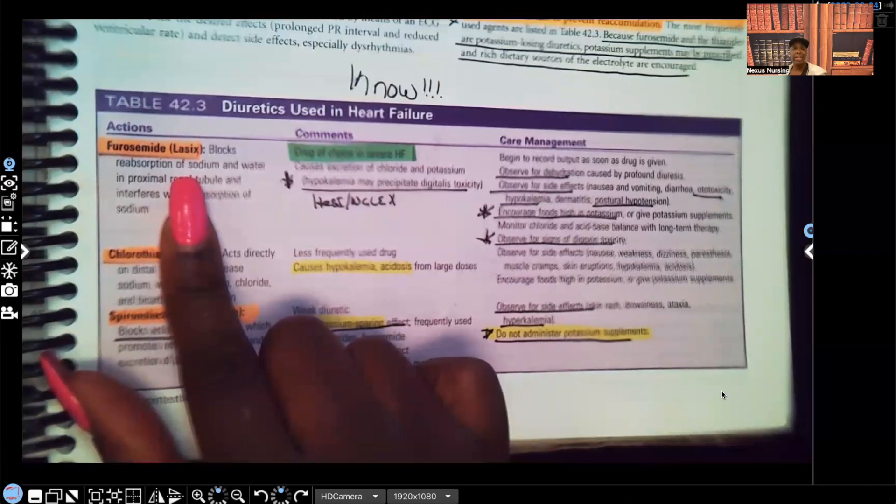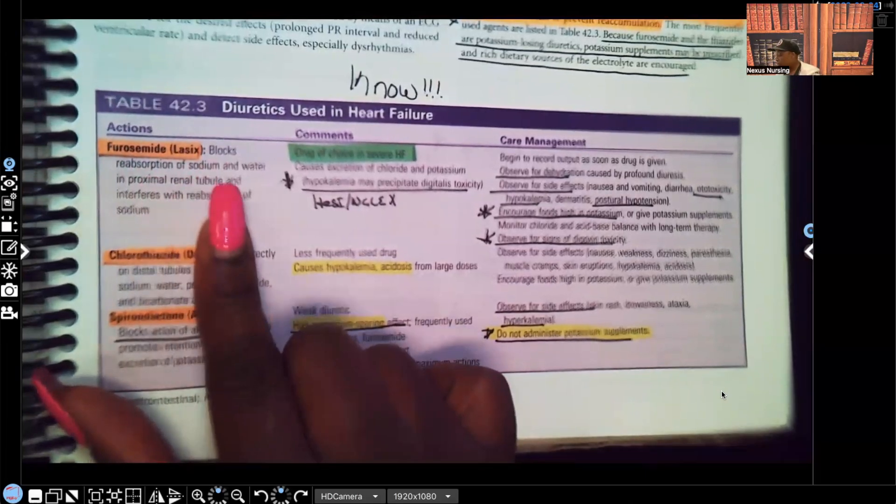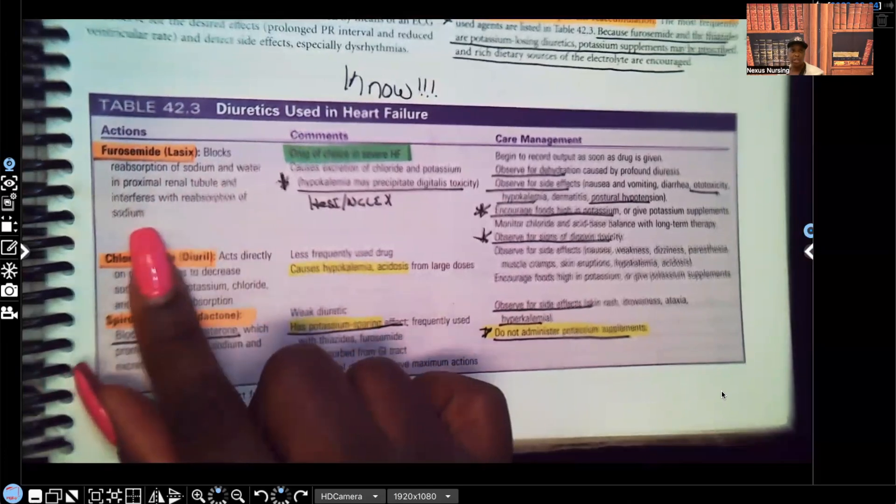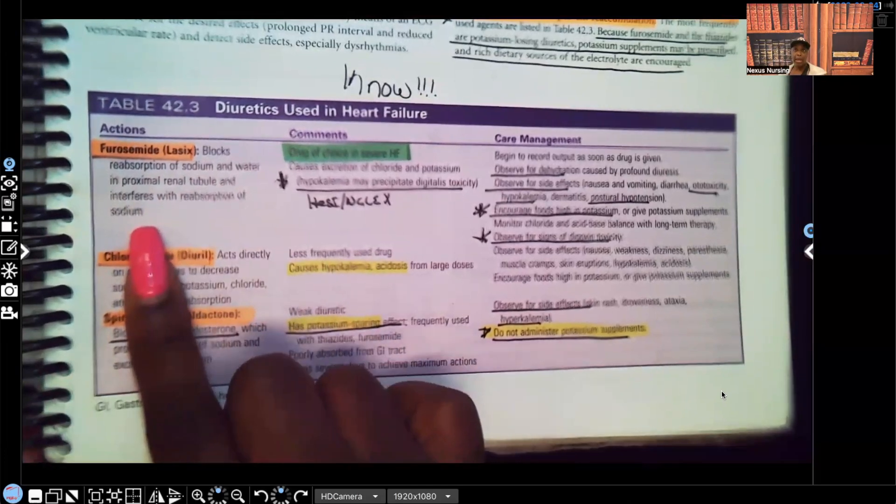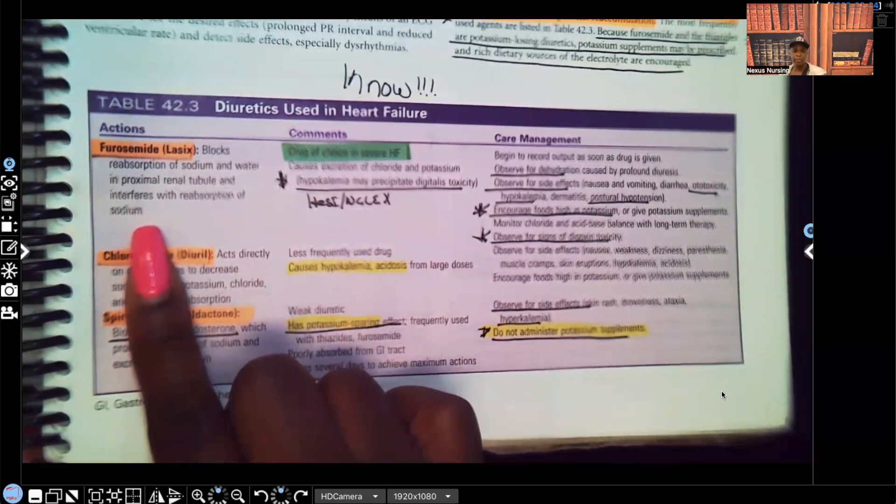Remember guys, potassium has a very narrow therapeutic range, 3.5 to 5. Anything outside of that range can cause that patient to have cardiac dysrhythmias and all other types of issues that we want to avoid. So whenever a patient's taking Lasix or furosemide, we're going to be looking at the potassium level.